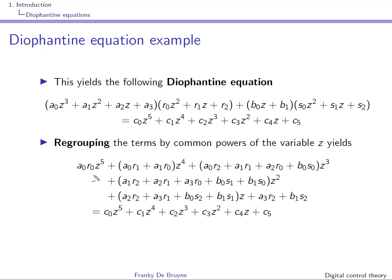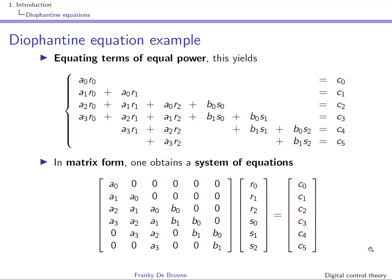For instance, looking at the term with Z to the fifth power, we have a constraint A0·R0 equals C0. When you look at the fourth power, you get another constraint, and so on. Clearly you have six constraints and six variables. What we will now do is write this in a matrix format. As shown in the previous slide, equating terms of equal power leads to six equations — one equating Z to the fifth, one for Z to the fourth, and so on. This system of equations can also be written in matrix format, with the unknown parameters associated to R(Z) and S(Z).